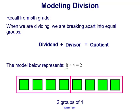Now the divisor is 4. So that means we want 4 of those 8 squares at a time. So we would have one, two, three, four and one, two, three, four.